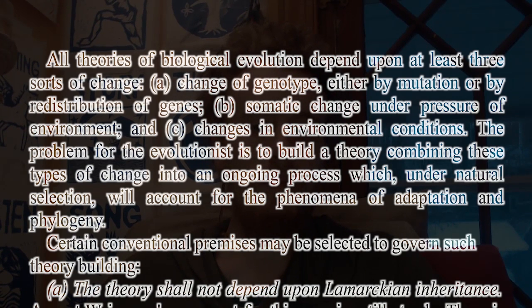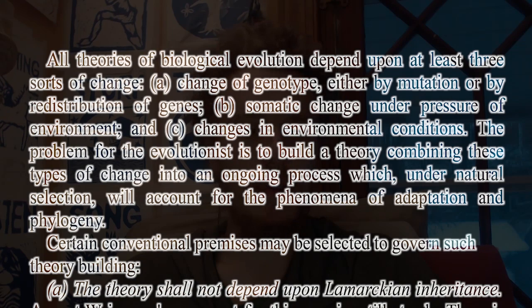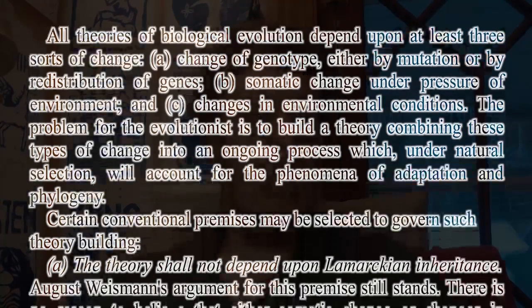The problem for the evolutionist is to build a theory combining these types of change into an ongoing process which, under natural selection, will account for the phenomena of adaptation and phylogeny.